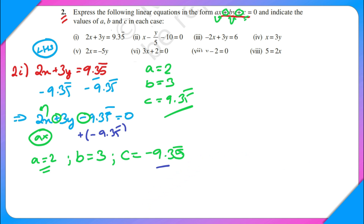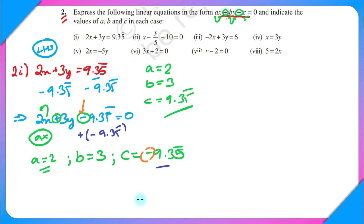In summary, to solve these types of questions: first, make sure all the numbers are on the left-hand side. Second, make sure the signs are correct — c has a plus sign, b has a plus sign, and a also has a plus sign in the standard form. So if your equation has a minus sign before a term, the corresponding constant will be negative. These are the only two things to keep in mind, and the questions are otherwise very straightforward.